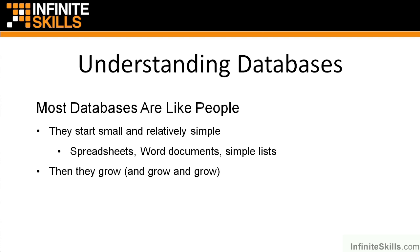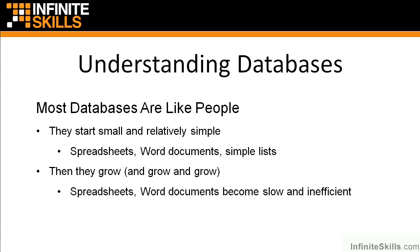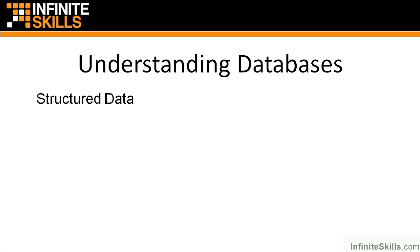But over time, that data continues to grow and grow and grow. And just like the little baby, it starts to get a little more complex. Different departments need it. They need to see it organized differently, compared differently. They need more and more information kept. And it's not too long before the spreadsheets, the Word documents, and all those become slow and inefficient — and also impossible to maintain. Because before you know it, there are 26 copies in 43 different places. Nobody knows whose copy is the latest, or how to go about getting it up to date.